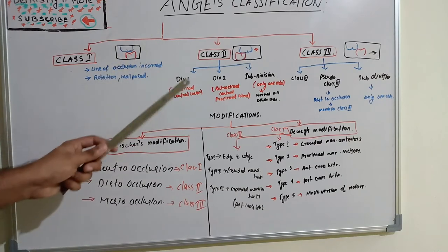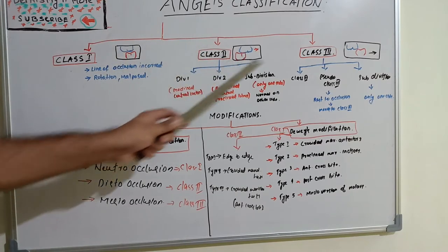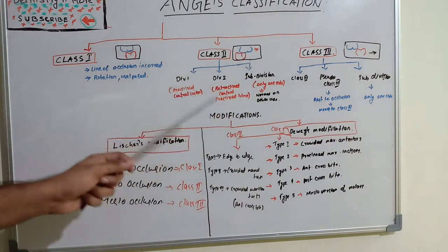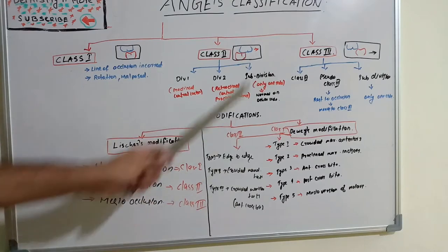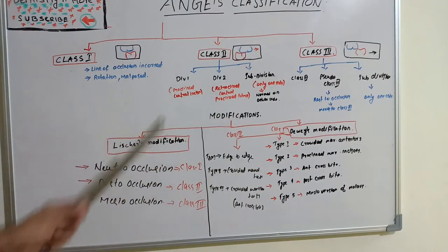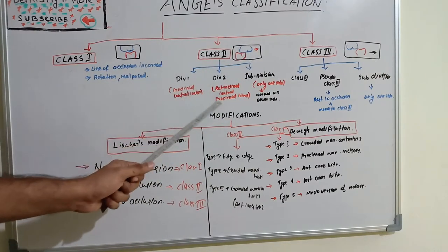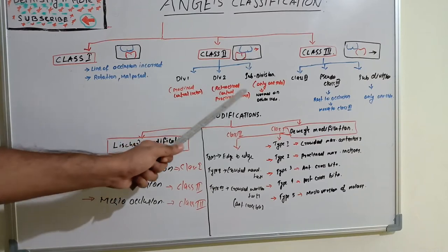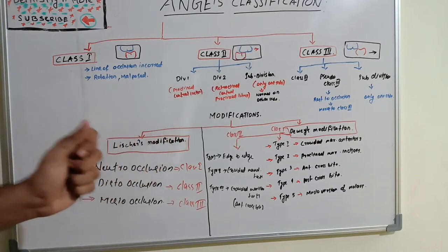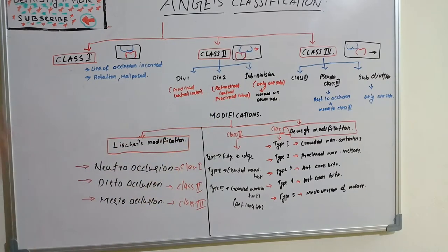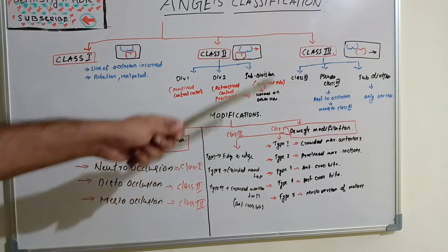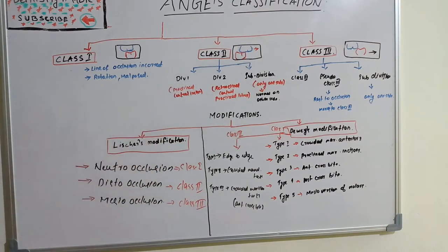So Class 2 has Division 1, Division 2, and Subdivision. Division 2 has proclined lateral incisors and retroclined central incisors. Subdivision means one side — either right or left — has Class 2, and the other side has normal occlusion.